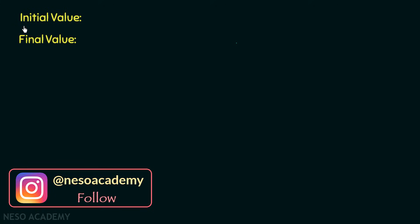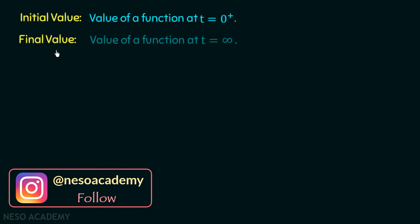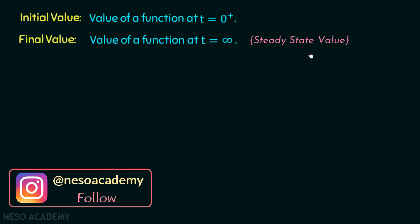The initial value is the value of a function at t equal to 0 plus. The final value is the value of a function at t equal to infinity. The final value of a function is also called the steady state value.